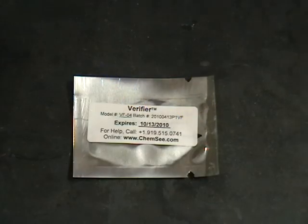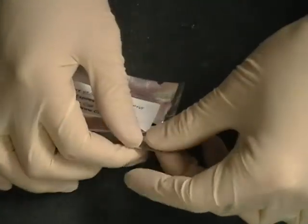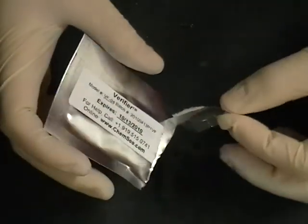Each verifier comes packaged in a small foil bag. To remove the verifier, carefully tear open the bag at the notches and remove the detector from the bag.